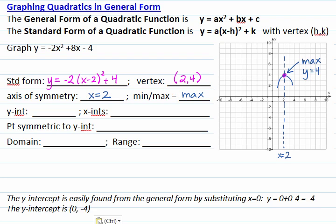The y-intercept is easily found from the general form by substituting x equal to 0. The y-value is f(0), which is 0 plus 0 minus 4, which is negative 4. So our y-intercept is the point (0, negative 4), and we can plot that on our graph.